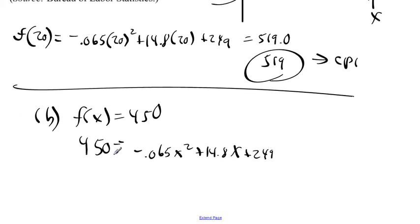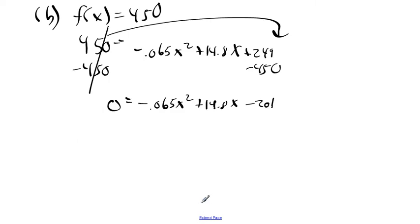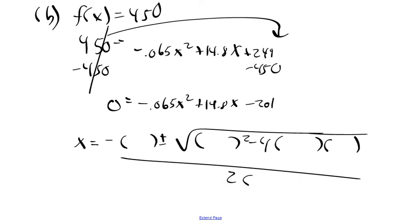We want to solve for x now. Let's put this in standard form. I'm going to subtract 450 from both sides, so we get 0 = -0.065x² + 14.8x - 201. When we plug this into the quadratic formula, we get x = [-b ± √(b² - 4ac)] / 2a. Our b is 14.8, our a is -0.065, and our c is -201.